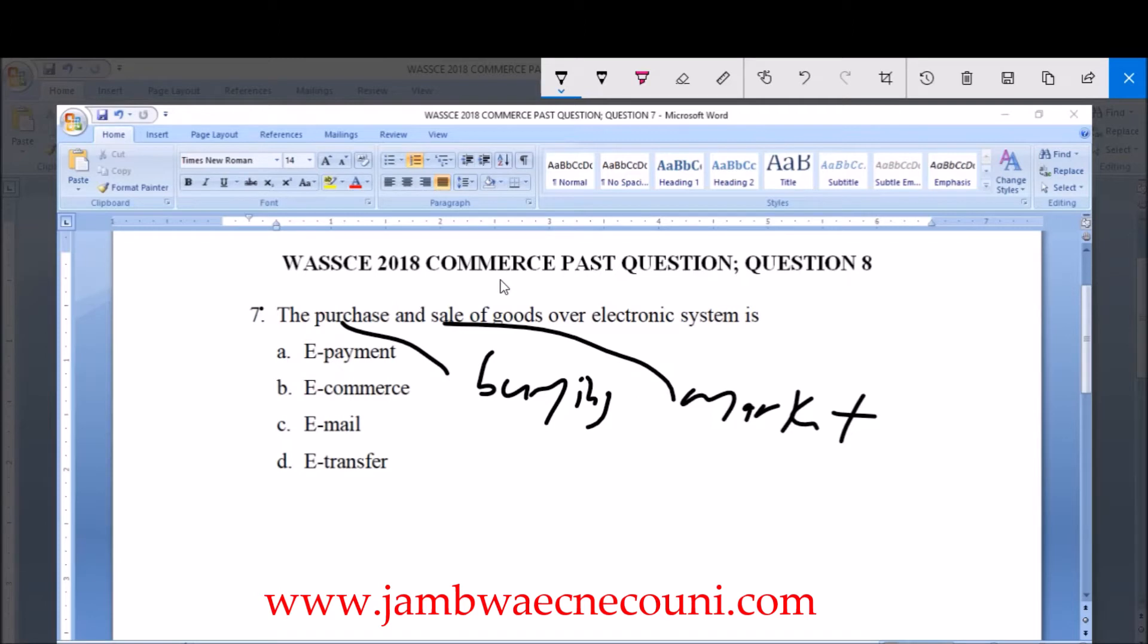all know, is as the concept implies, a product. Then electronic system—that is when we use a gadget, that is an electronic device or gadget, to sell or to buy. What do we call it? Option...